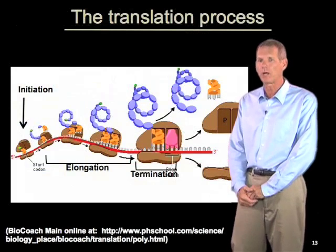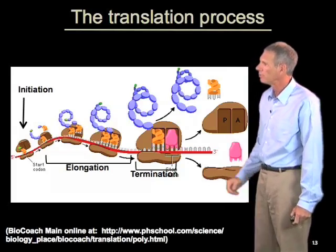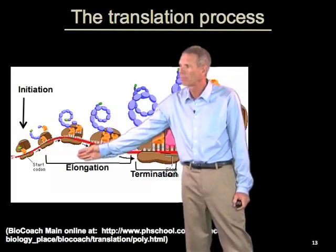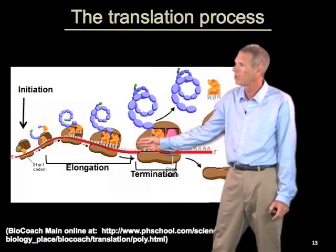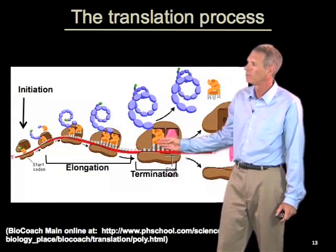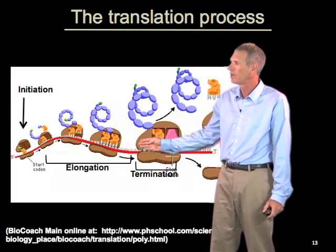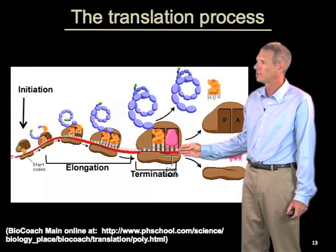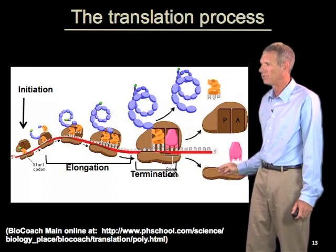Translation is a complex process, and it has three different phases. Translation initiates with what's called the initiation phase, where ribosomes load on the message, followed by elongation, where the polypeptide chain is produced, where the ribosome moves along the mRNA translating each of the codons, followed by a termination phase, where the ribosome recognizes the stop codon, releases the newly produced protein, and the ribosome subunits disassemble.